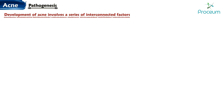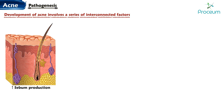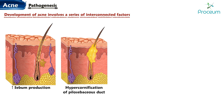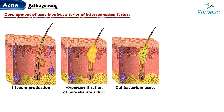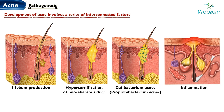Pathogenesis of Acne. The development of acne involves a series of interconnected factors: increased sebum production, hypercornification of the pilosebaceous duct, colonization of the duct with Cutibacterium acnes (formerly known as Propionibacterium acnes), and inflammation.